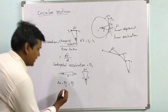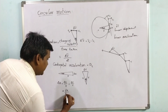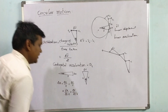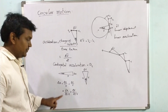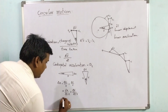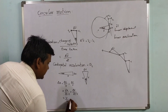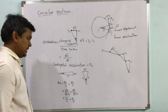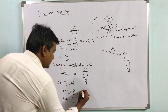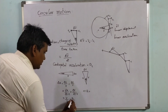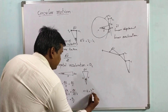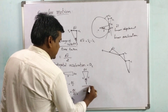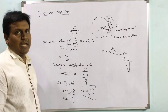Dividing both sides by δt: δx / (δt · r) = δv / (δt · v). Here δx / δt is displacement per unit time, which is velocity, so v / r = a / v, where δv / δt is acceleration. By cross multiplication we get acceleration a = v² / r. This acceleration is the centripetal acceleration, so the centripetal acceleration a = v² / r.